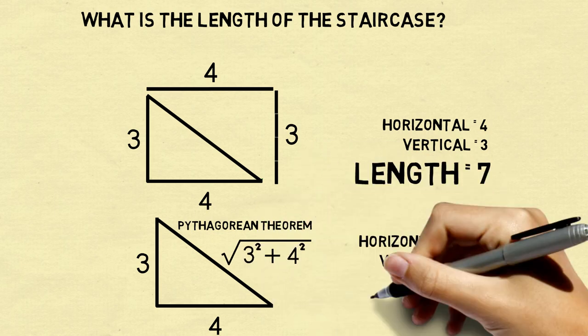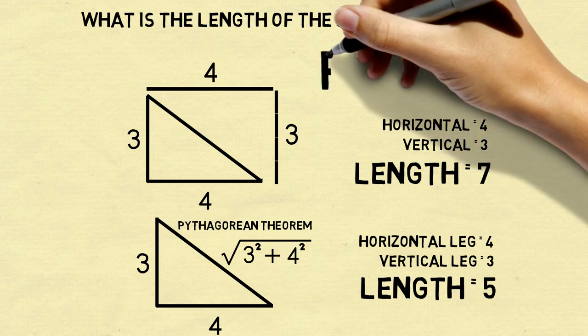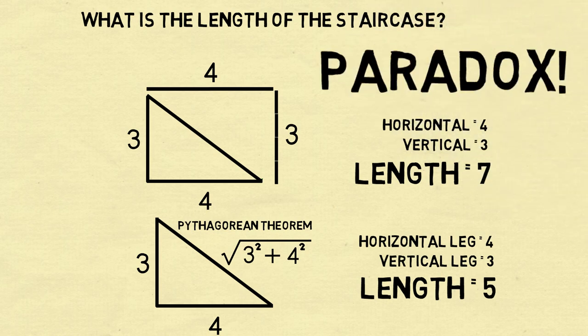And you would find that the length of that diagonal is 5. And this is a paradox, because how can the length be 5 and also 7 at the same time?